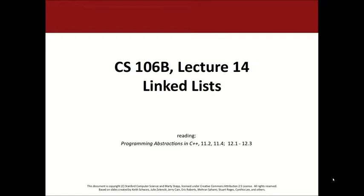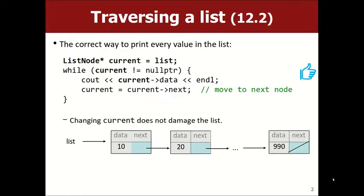Quick recap: we wrote these nodes that had pointers that pointed to each other, and we chained them together to make a linked list. We wrote code that could walk across a linked list — traverse it to examine or print all the elements. The key concept from last time was that you often need to make a temporary variable. I often call it 'current' because it's the current node I'm looking at right now.